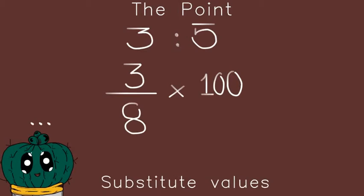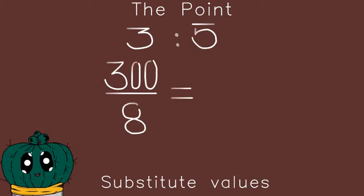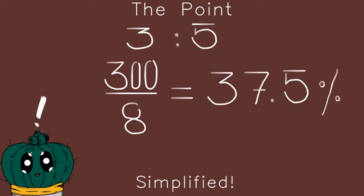When you're done with that, you can start simplifying. Start by simplifying the numerator first: three times one hundred gives us 300. Then 300 divided by eight gives us 37.5%. I write the percentage symbol right in front of that.